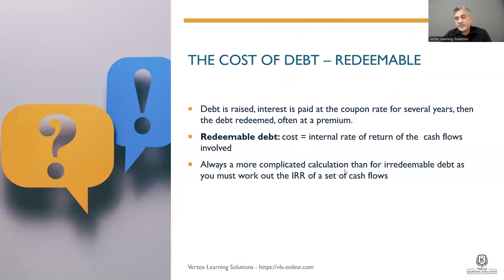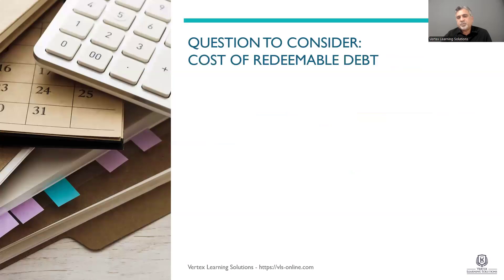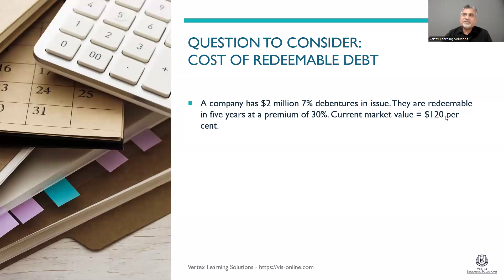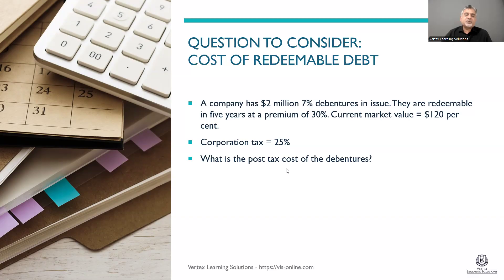Let's suppose a situation: a company has $2 million 7% debentures in issue, meaning the coupon rate is 7% over every $100 bond. They are redeemable in five years at a premium of 30%, so a $100 debenture will be redeemed at $130. The current market value is $120. Face value is $100, but market value is $120. Corporation tax is 25%, and we need to find the post-tax cost of the debentures.